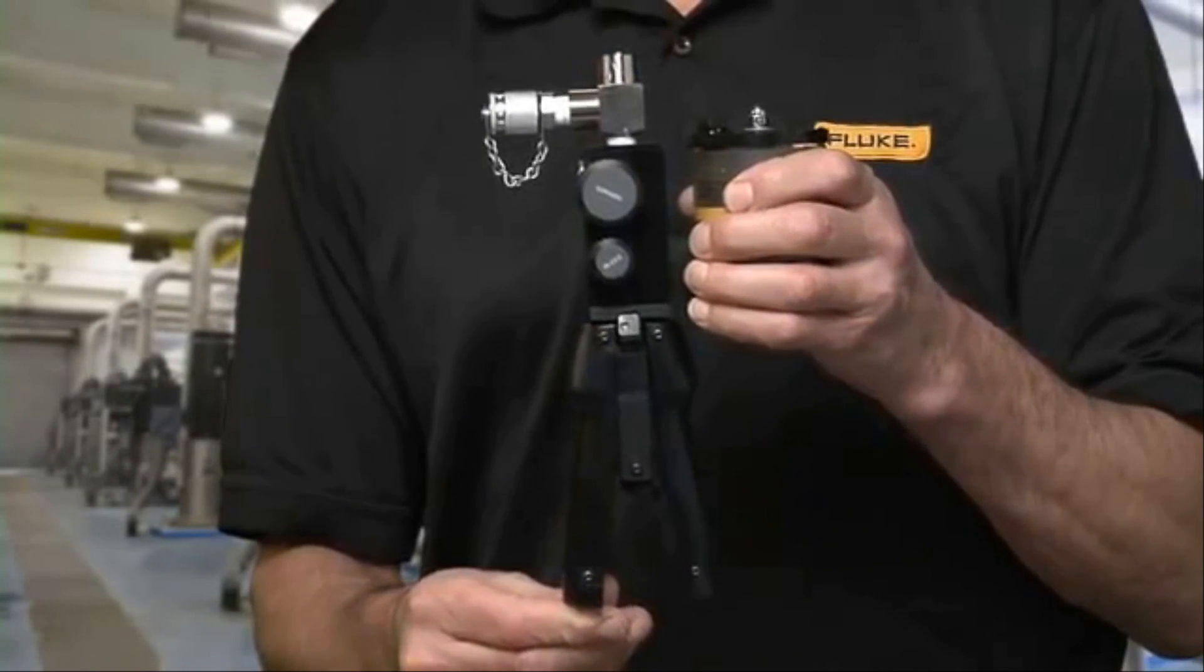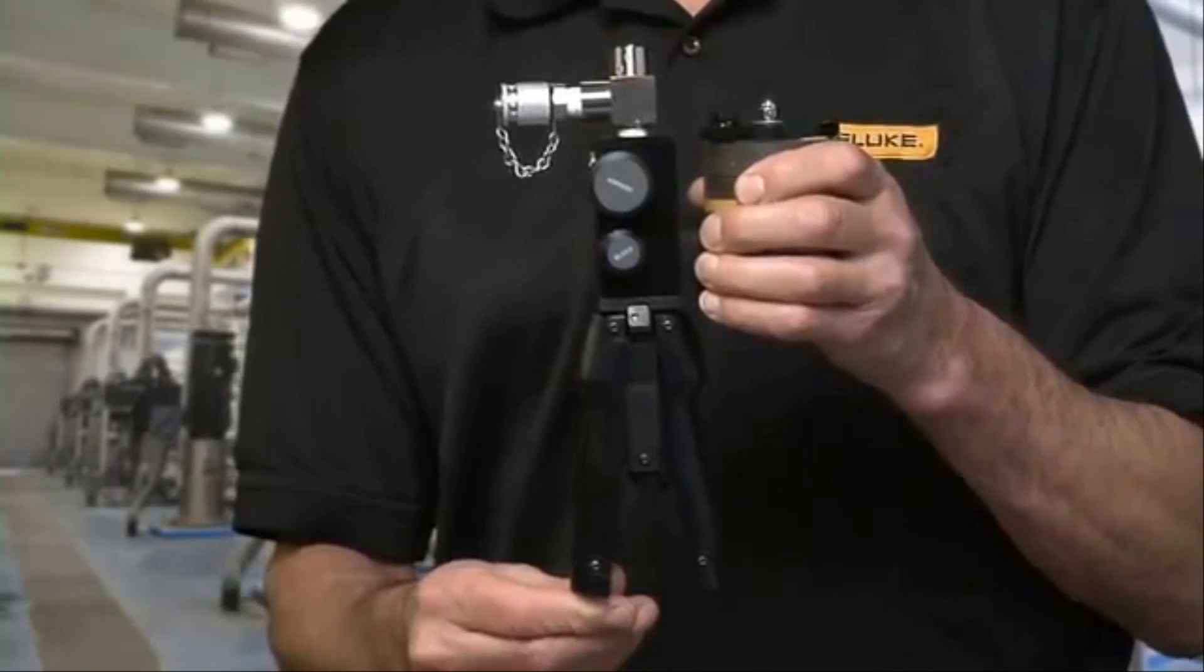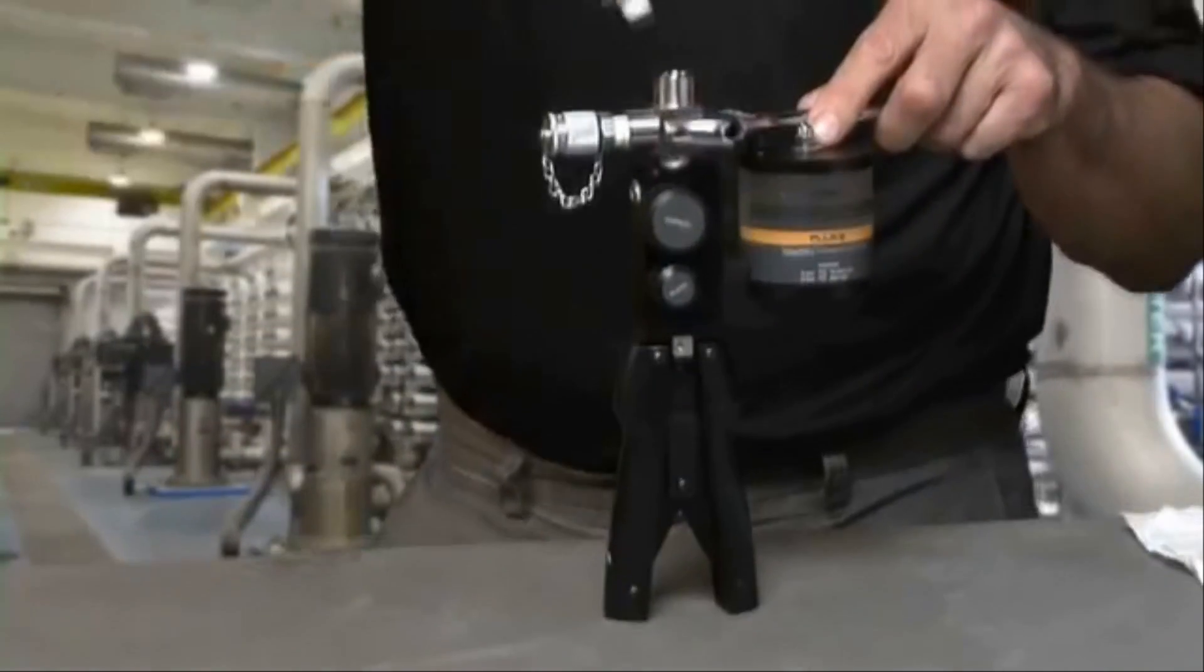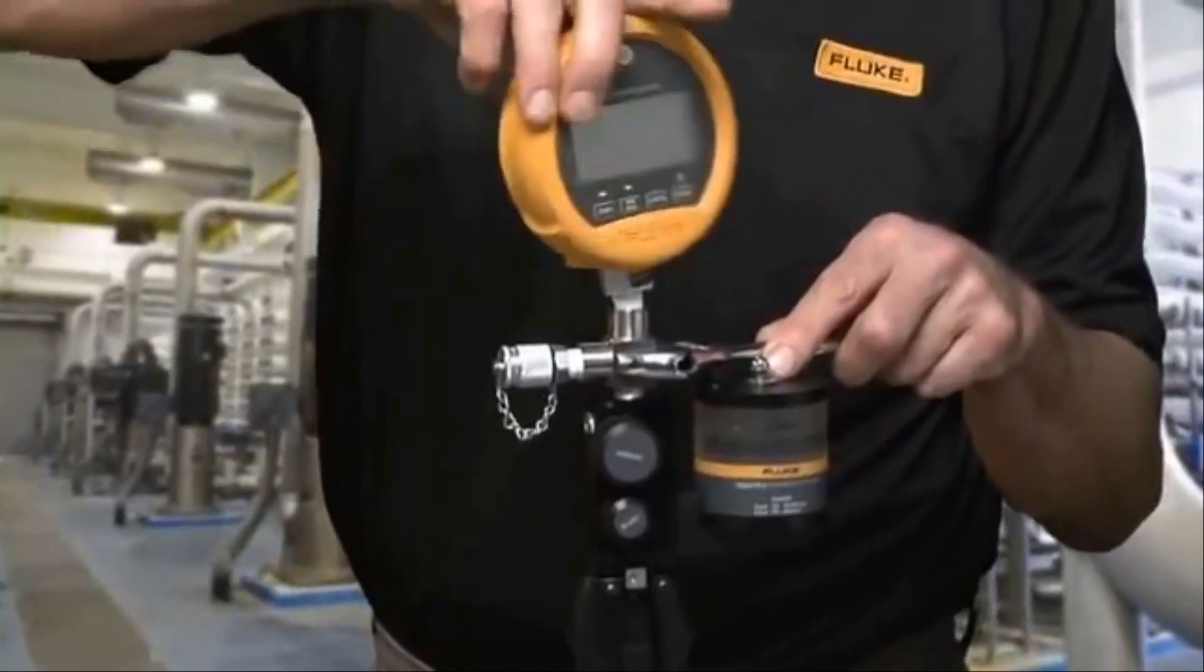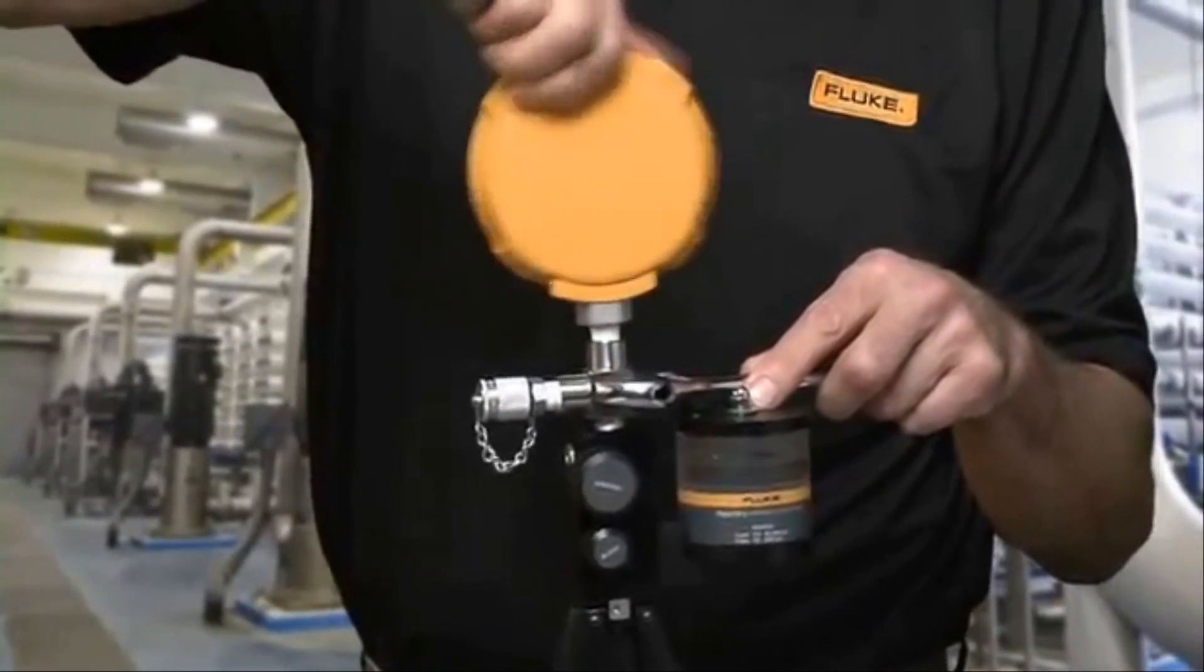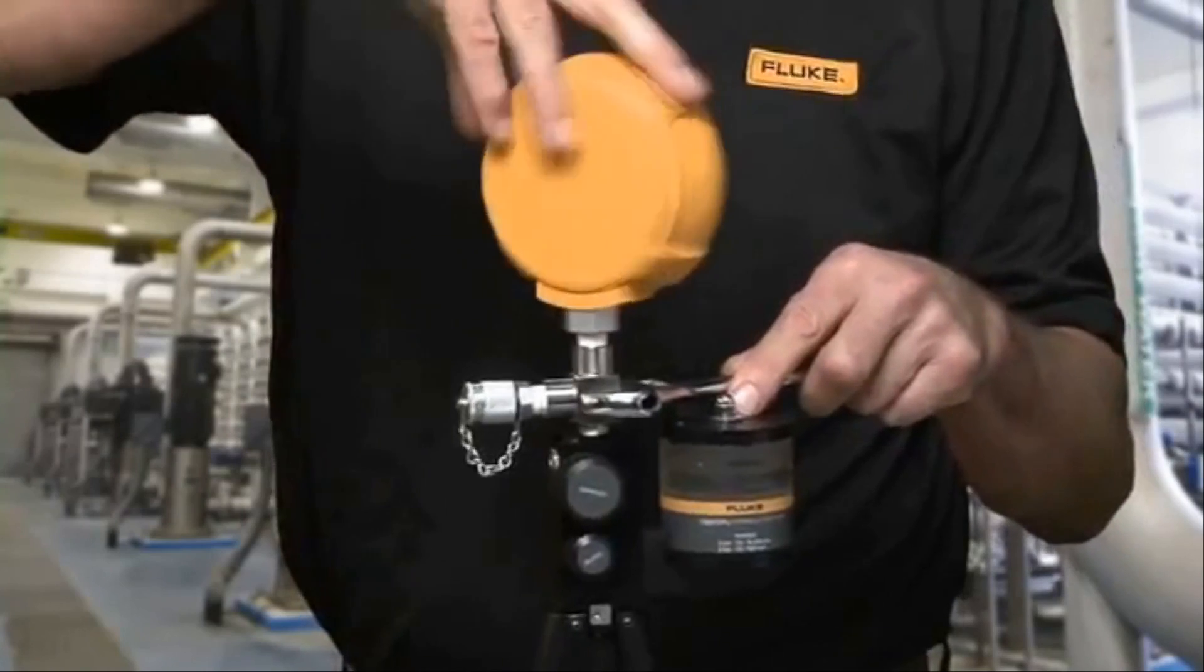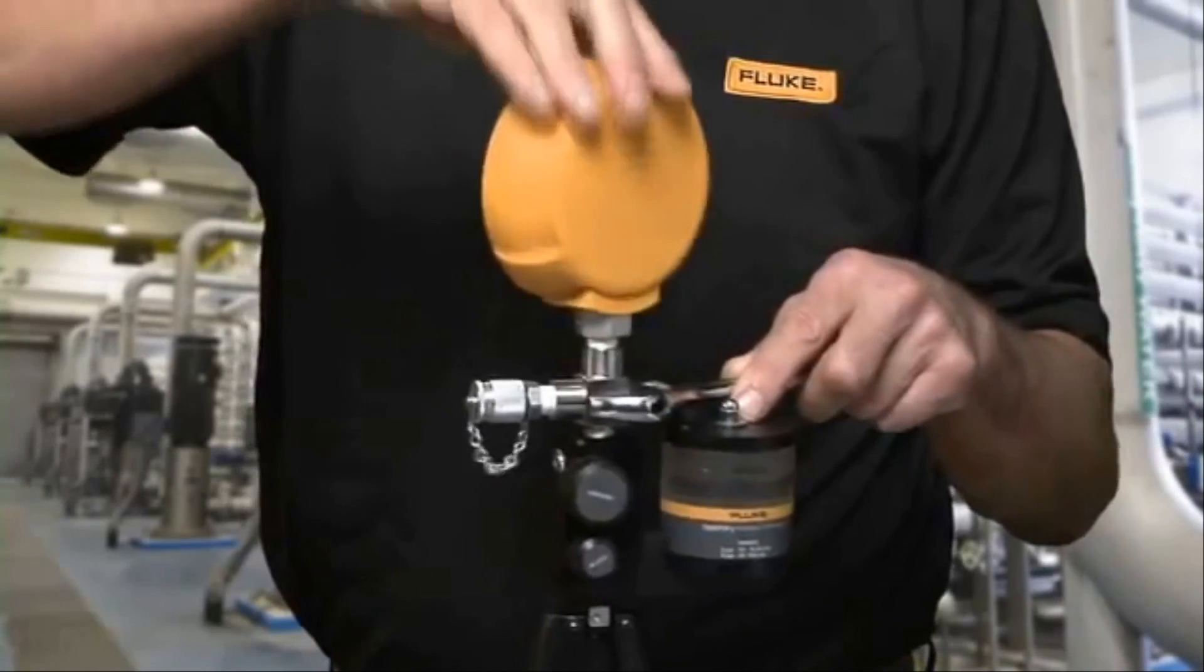For more detailed information, watch the pump priming video at Fluke.com. When connecting the Fluke 700G series precision test gauges to a hydraulic test pump, make sure to use a backup wrench on the pump so the pump does not get damaged.